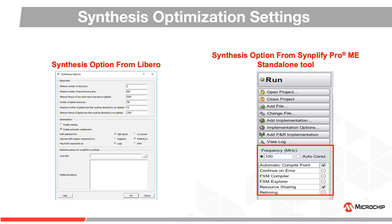FSM compiler and explorer are state machine optimizers that will automatically recognize state machines and optimize them by recoding the states and optimizing associated logic to meet performance requirements.